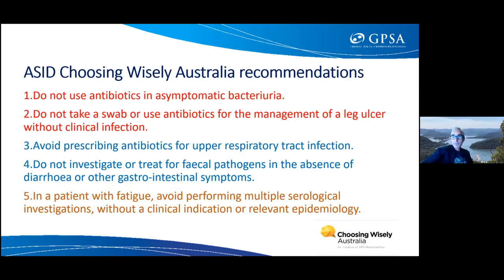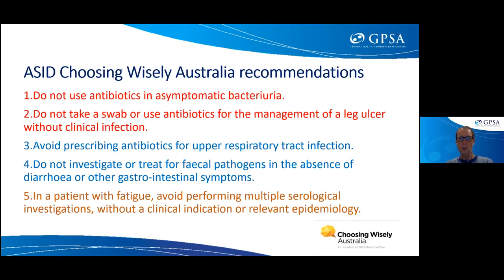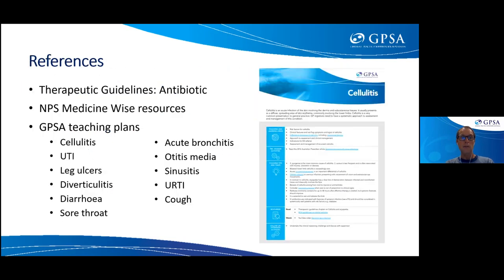We covered respiratory tract infections and faecal pathogens today, and last week covered UTIs and skin and soft tissue infections. The fifth area not covered today involves serology for conditions like Ross River virus — positive serology is found in a large proportion of the population, including many tired people without active infection, making it not very useful diagnostically. GPSA resources including teaching plans on all these conditions, including a new one on diverticulitis, are available for supervisors to use with registrars.